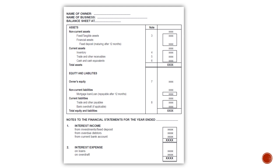You will have two main headings in your balance sheet: assets and equity and liabilities. Under assets, you will have two subheadings — non-current assets and current assets — separating between long term and short term. Non-current assets, which are longer than 12 months, will be your fixed or tangible assets and financial assets, for example a fixed deposit. Current assets will be inventory, trade and other receivables, and cash and cash equivalents. The total of non-current assets and current assets will equal your total assets.